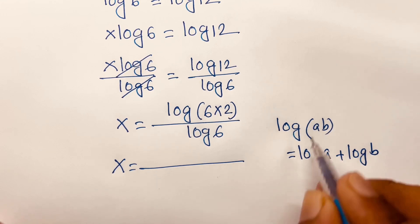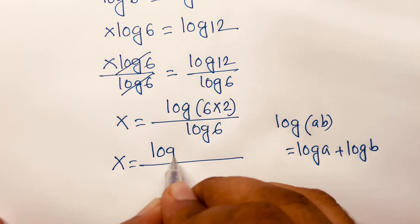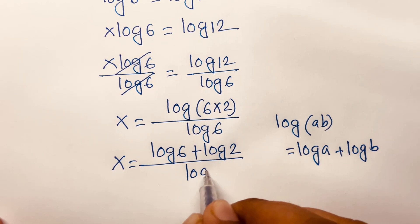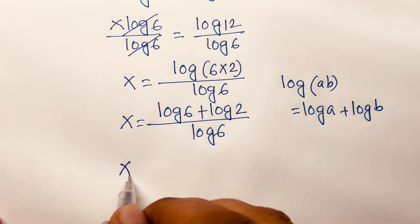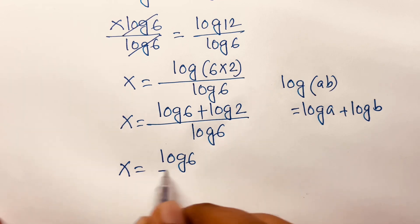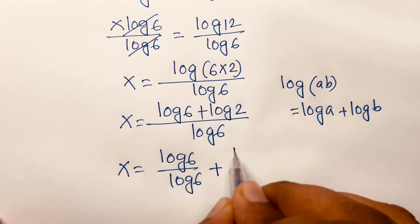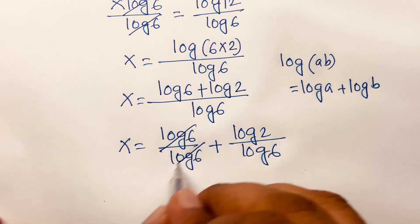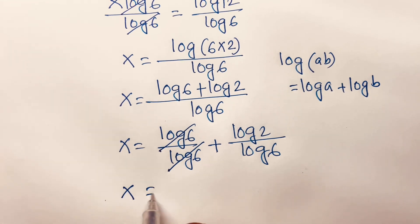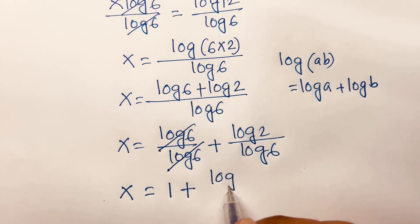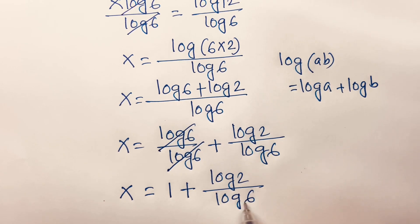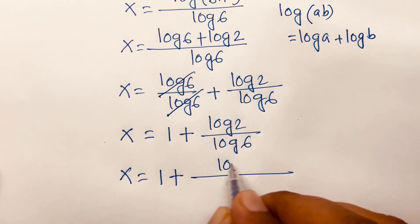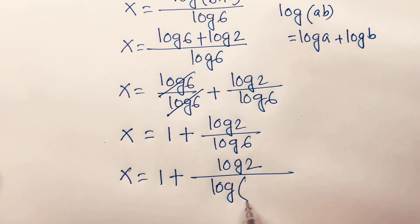Using the rule log(a·b) = log a + log b, I can say x is equal to (log 6 + log 2) over log 6. Splitting the fraction: x is equal to log 6 over log 6 plus log 2 over log 6. The log 6 over log 6 cancels, giving x is equal to 1 plus log 2 over log 6.